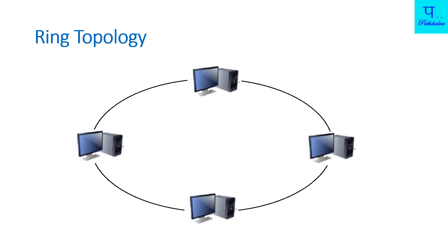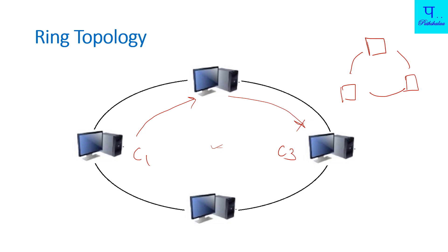Now we will see Ring Topology. As you can see, the devices are connected in a ring formation — each device is connected to the next one. There are four devices and they form a ring. If you want to send data from C1 to C3, the data travels through the intermediate devices in sequence, passing through each node along the ring until it reaches C3 or C4. Since communication travels in one direction around the ring, it is called Ring Topology.